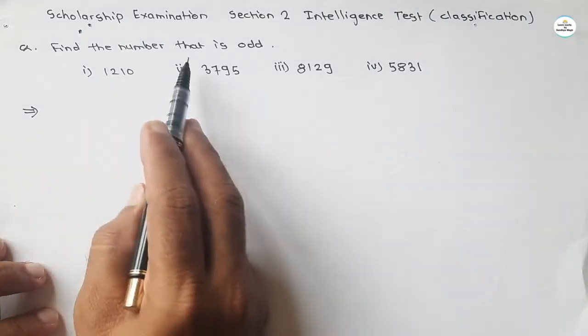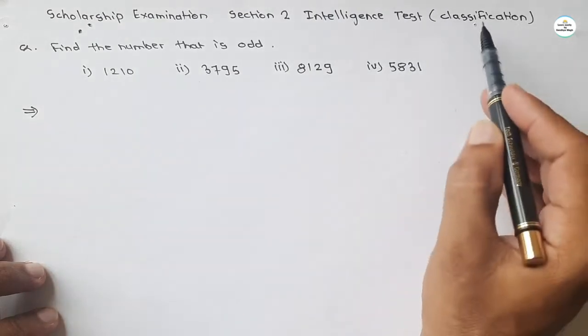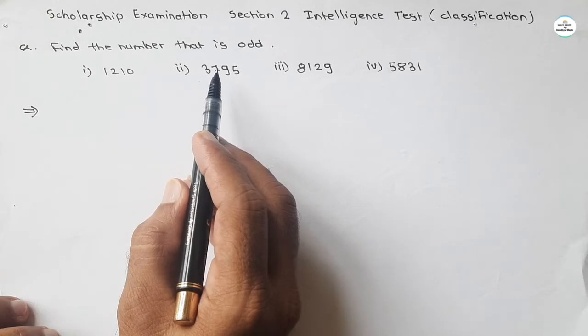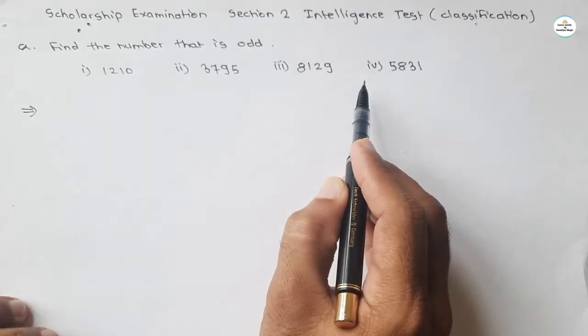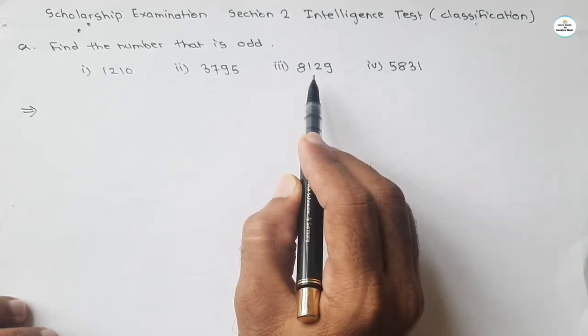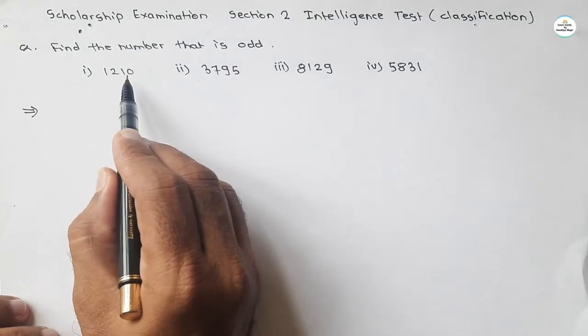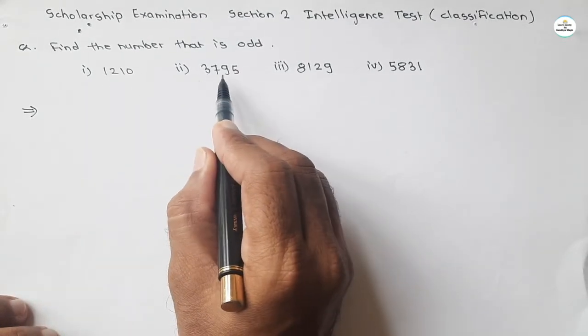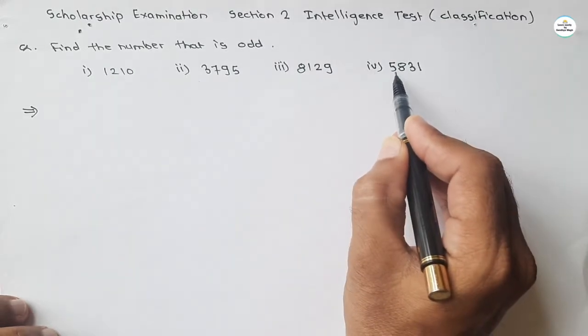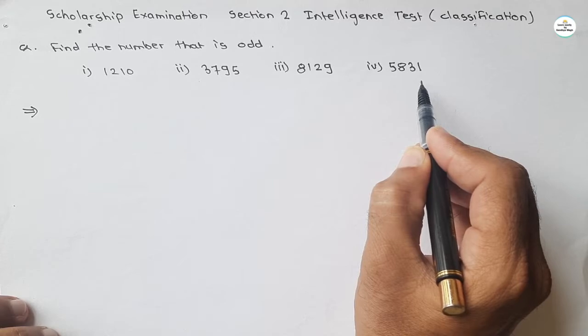Question is find the number that is odd. This type of question comes under the classification section. So what this question states? There are four numbers and out of that four numbers, one number is odd. We have to find it. Just look at the numbers: 1210, 3795, third is 8129, and fourth one is 5831. So these are the four numbers. One number is odd.